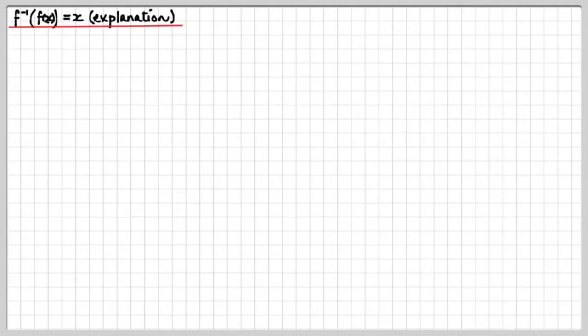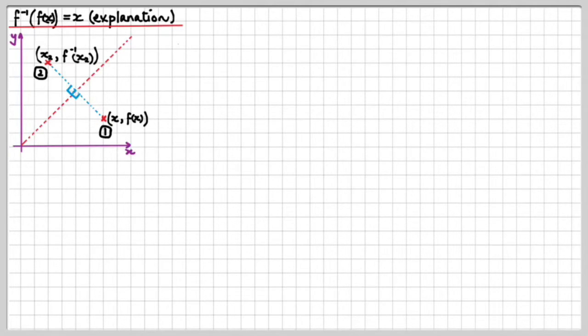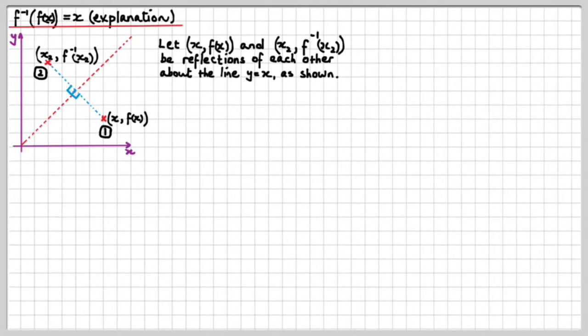So now, I'm going to prove to you that f⁻¹ of f of x equals x as an explanation for you just to put your mind at rest as to why this is the case. We have a diagram. This is point 1 and this is point 2. Point 1 is x and f of x and point 2 is the mirror image on the other side of the line y equals x in other words, the corresponding point on the inverse function corresponding to this point on the original function and I've labelled that x₂ and f⁻¹ of x₂. Now let's just go with this argument.